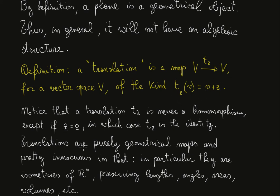Translations are purely geometrical maps and pretty innocuous in that, in particular, they are isometries of R^n preserving lengths, angles, areas, volumes, etc.